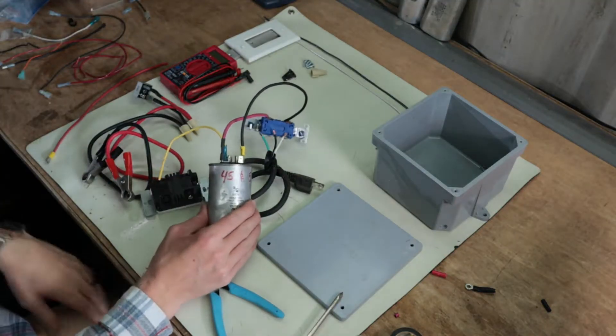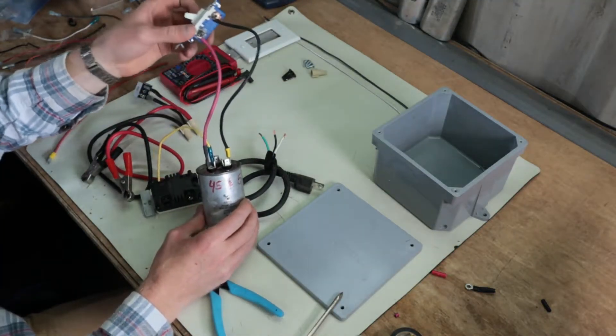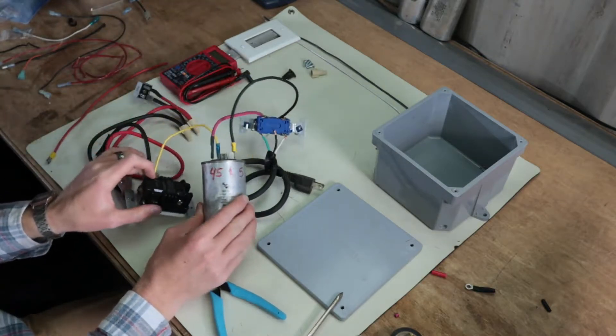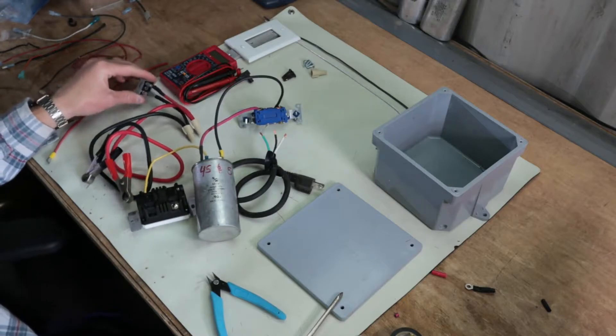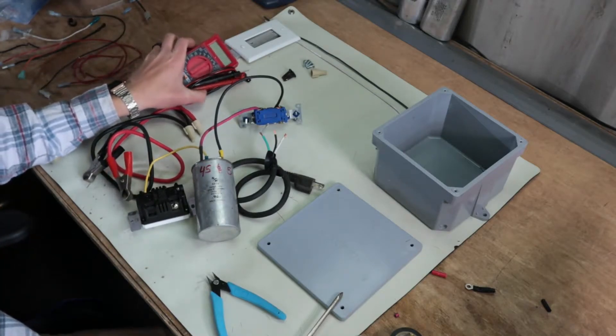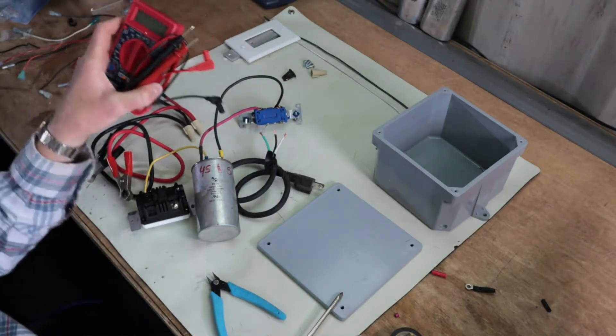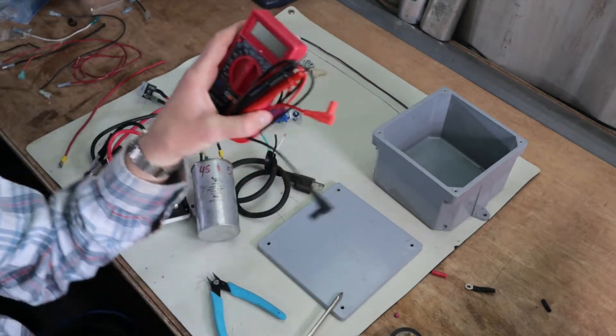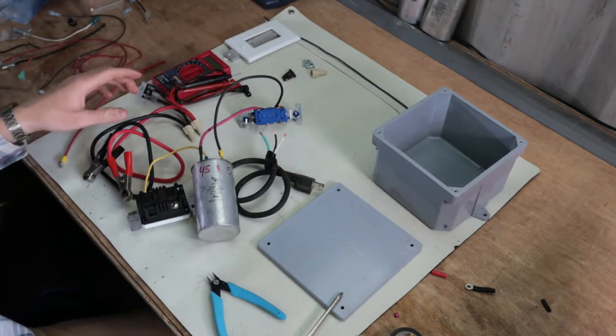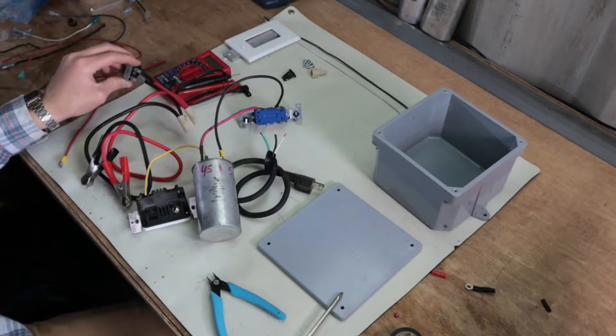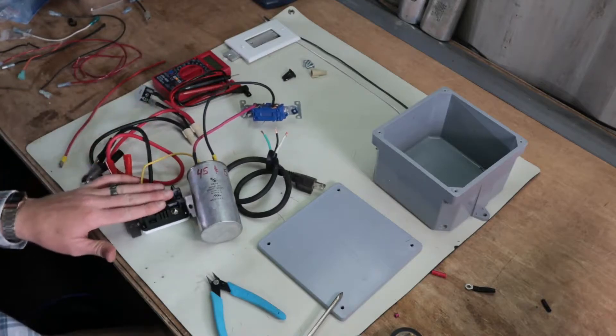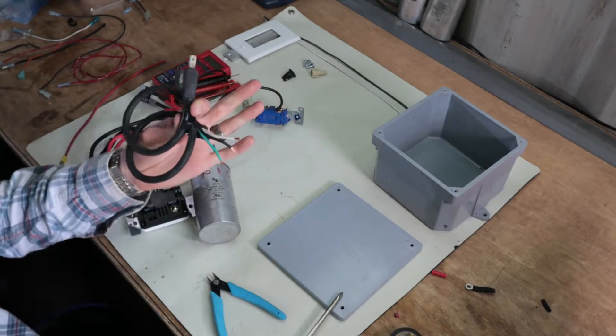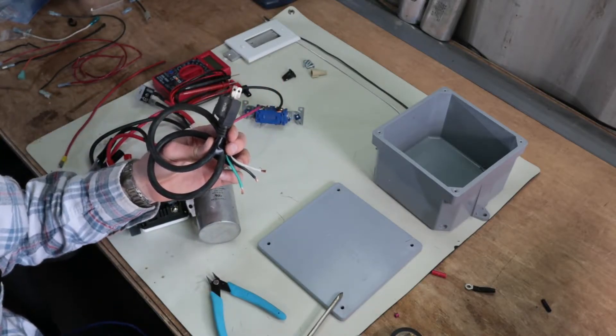Alright. So now that we've got our capacitor and our switch and part of our timer wired as well as we've started on the bridge rectifier here, I'm going to move on to wiring in our multimeter which is going to show us the voltage of our batteries. And I'm going to wire in the rest of the bridge rectifier as well as finish up the wiring for our switch, our timer and get the AC power in all wired in.